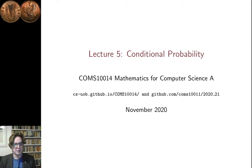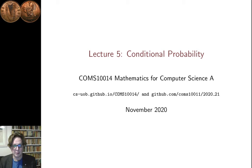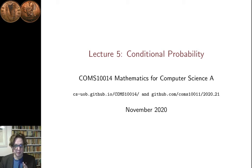Hi, I'm Conor Houghton and this is Lecture 5 in the Probability and Combinatorics section of Mathematics for Computer Science A. This lecture will be about conditional probability.